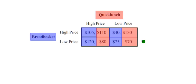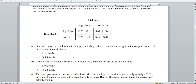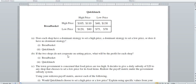So Quick Lunch doesn't have what we call a dominant strategy, because they need to go low if Bread Basket goes high, and they need to go high if Bread Basket goes low. They're not sure what to do because theoretically they don't know what Bread Basket is going to do. So we can say that Quick Lunch does not have a dominant strategy.